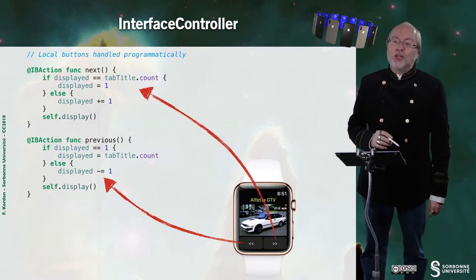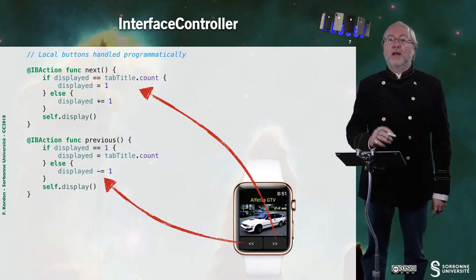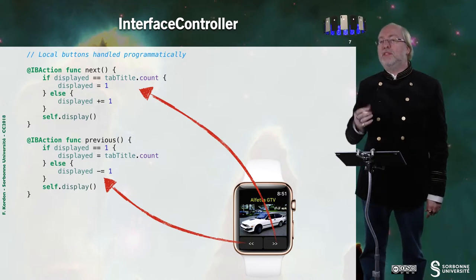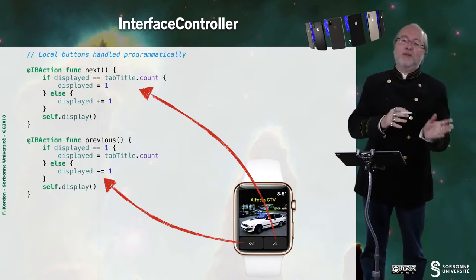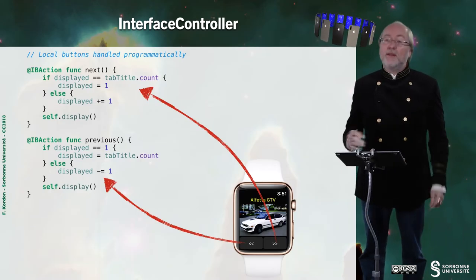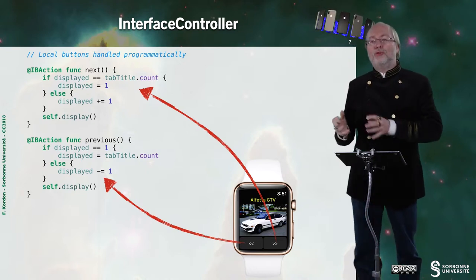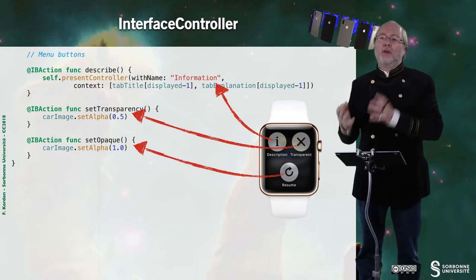Here I have the two actions associated to the previous and next buttons. I'm just changing the currently displayed image index. I have a circular loop: if I'm on the last one, I start from one — the successor of the last is the first. And the predecessor of the first is the last, for the previous function. I don't need to implement anything for the About and Help buttons since they are statically associated to storyboard interfaces in the storyboard file.